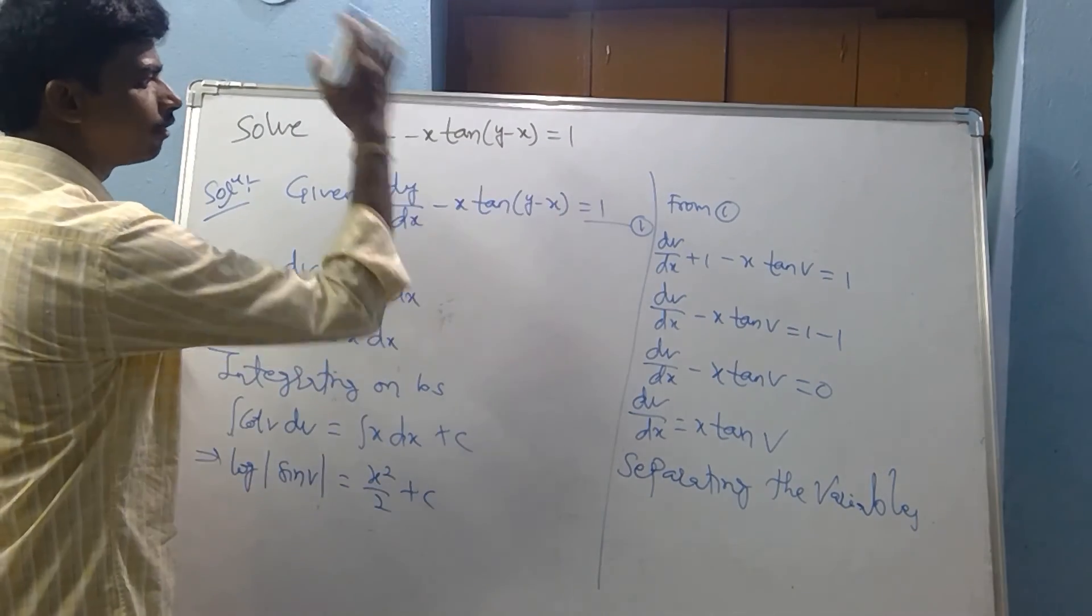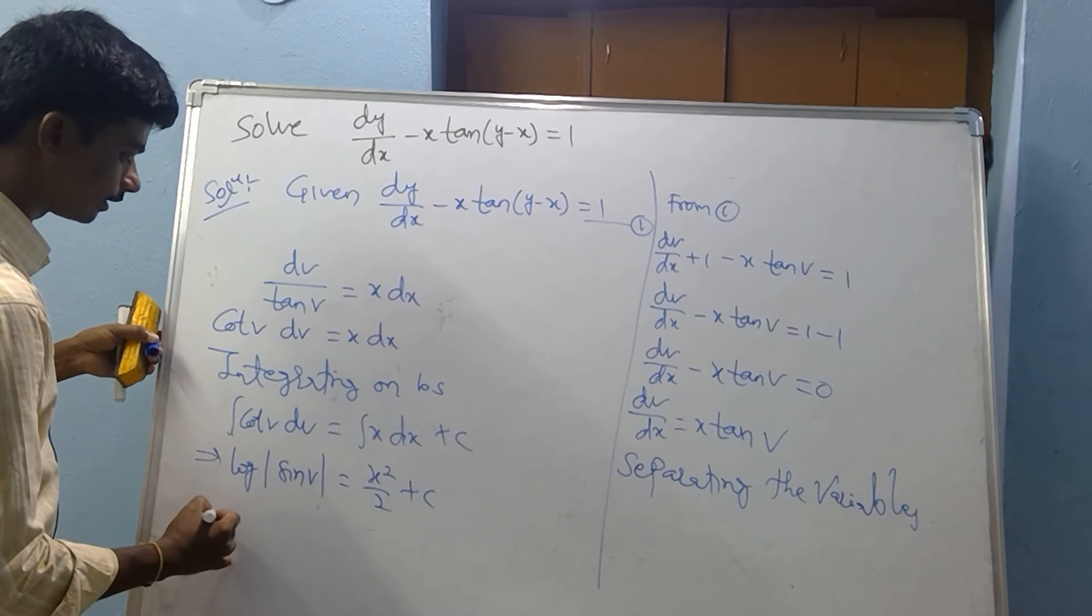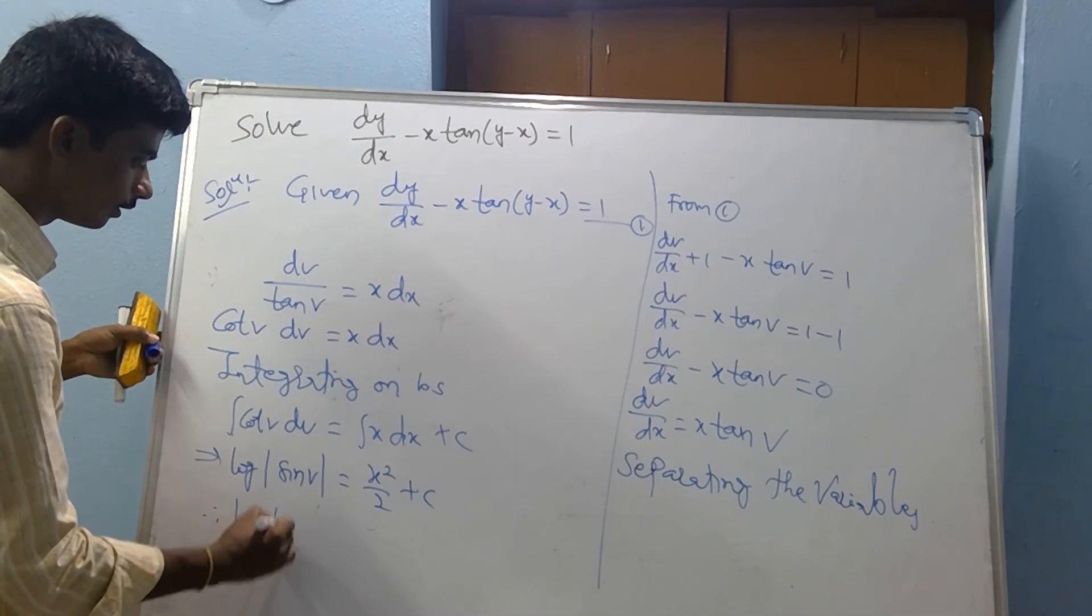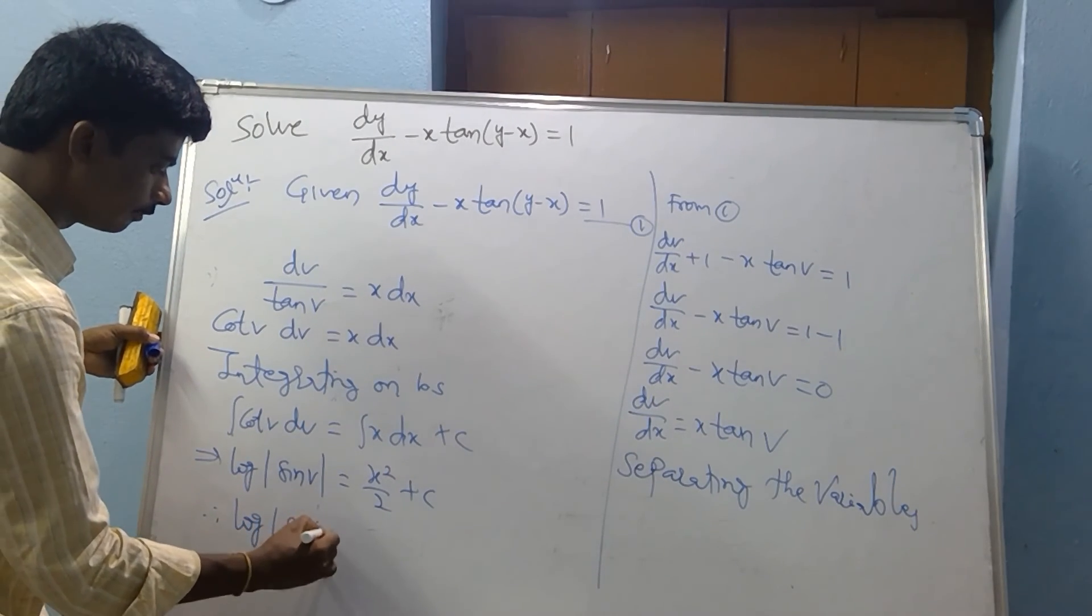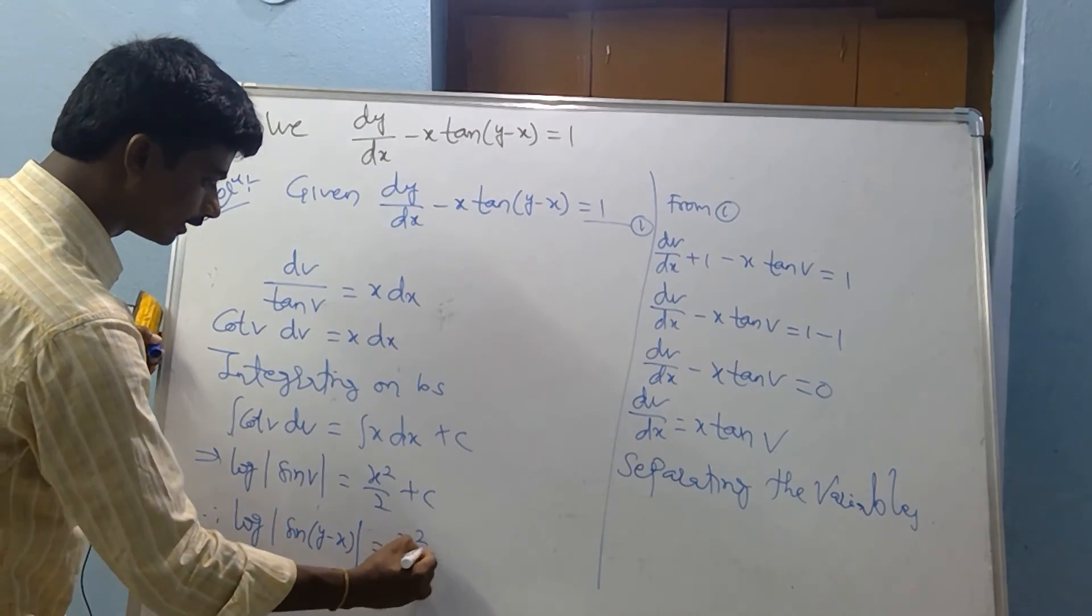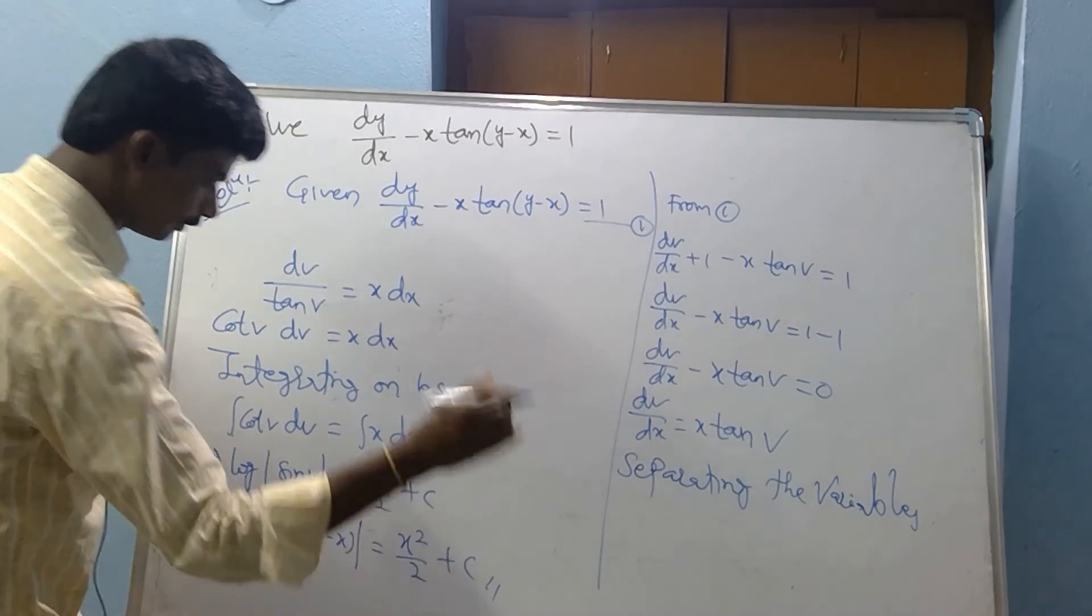But what is v? v equal to y minus x. Therefore log mod sin(y minus x) equal to x squared by 2 plus c.